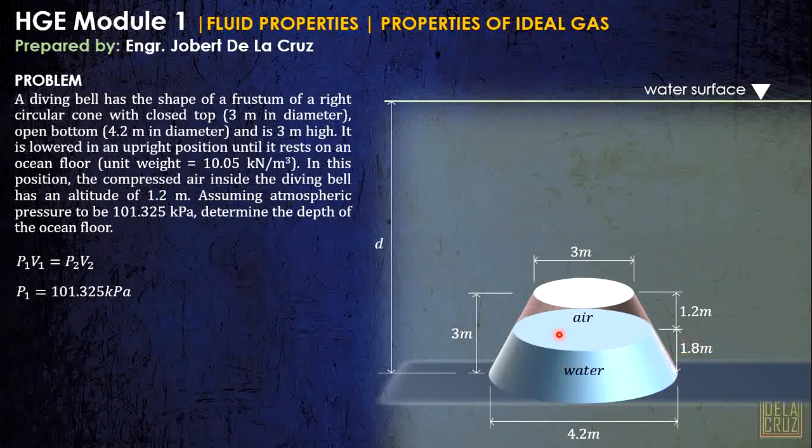And take note, this should be 1.8 meters, since that is 3 minus 1.2. By calculating this depth, we can express this into d minus 1.8. That is d minus this 1.8.